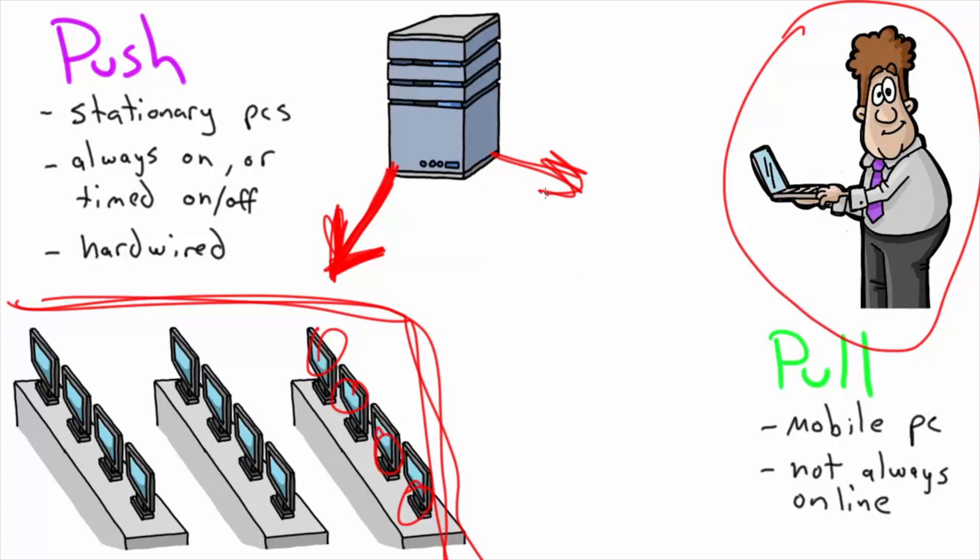Whereas in a pull technology, when you log into the network, the computer can say, 'Oh, I'm on the network with my server. Now I'm going to send that request,' so the server can update it. A pull makes a lot more sense if it's a mobile PC that's not always there, or if it's not always online. A pull scenario is going to make more sense and get the data more efficiently.